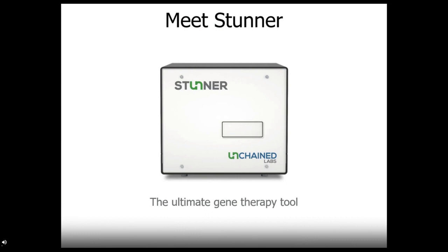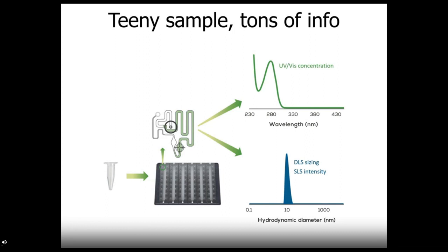Stunner is the only system that pulls together UV-Vis concentration, dynamic light scattering and static light scattering data from just the same two microliter samples. This means Stunner can dig into AAVs, LNPs and lentivirus samples for all kinds of info, such as nucleic acid quant, sizing and even AAV titers. Stunner combines UV-Vis for concentration and DLS for sizing. SLS intensity data is also read during a DLS experiment, so low-volume, high-throughput DLS to get the size and PDI data you need, while quantifying DNA or RNA concentration. All this is done in a 96-well plate-based format that powers high-throughput analysis, giving you all this data on 96 samples in one hour.